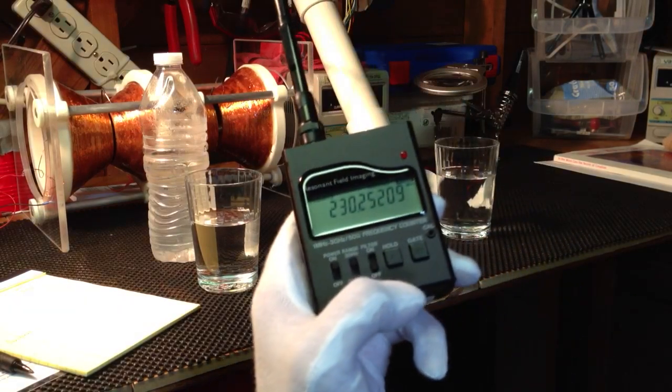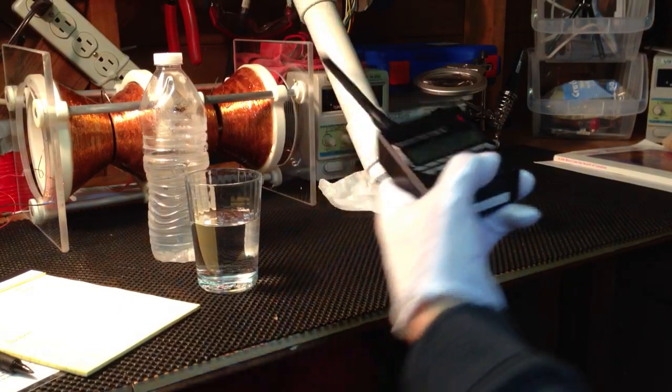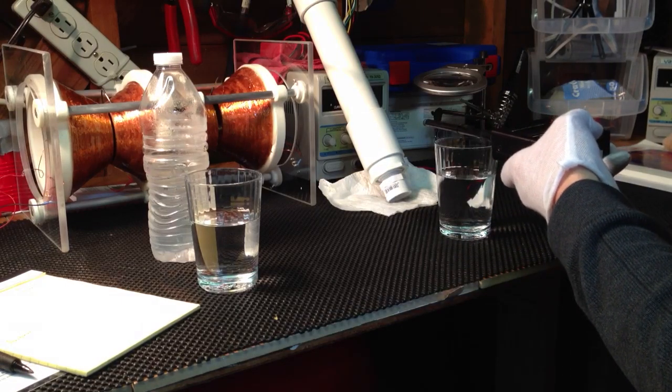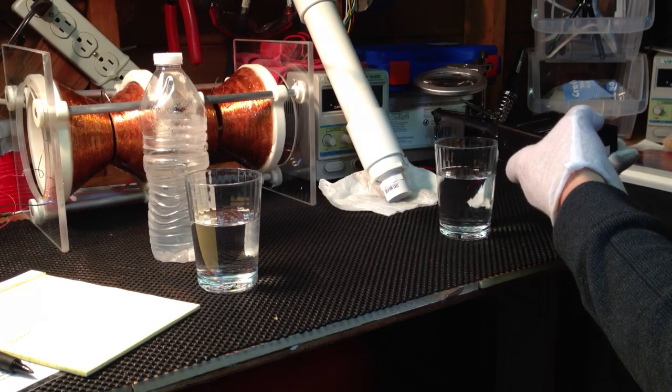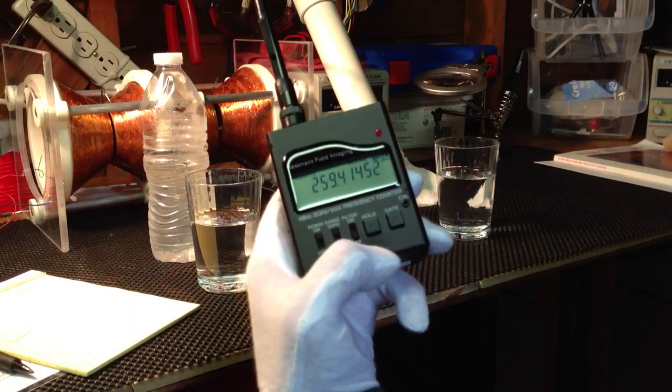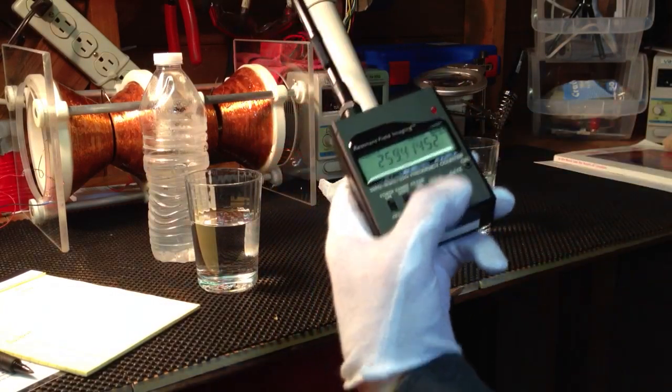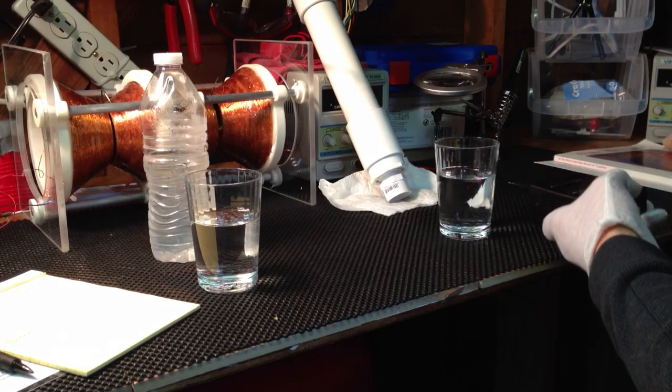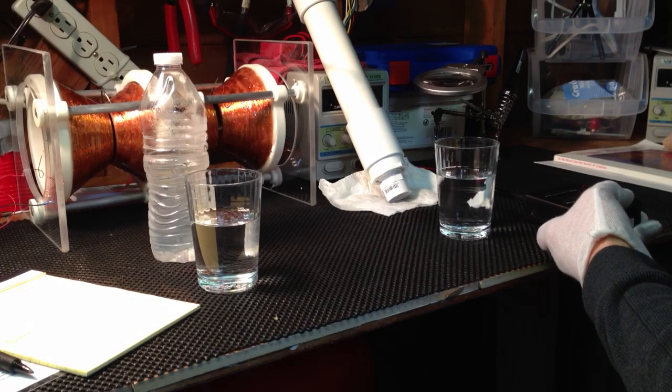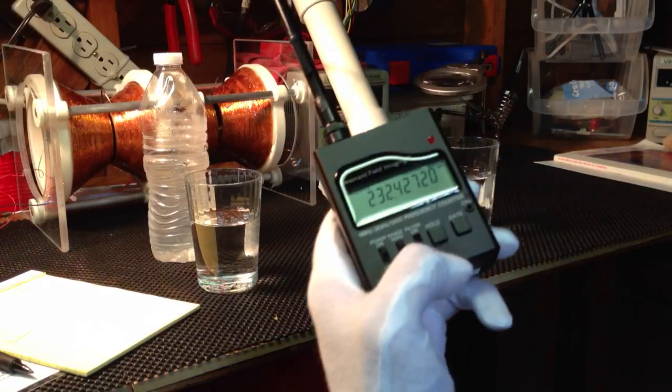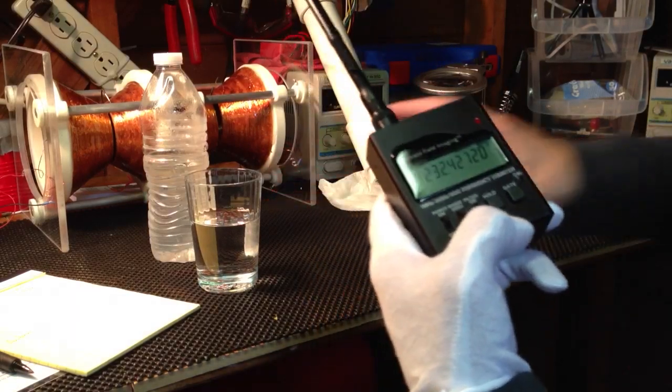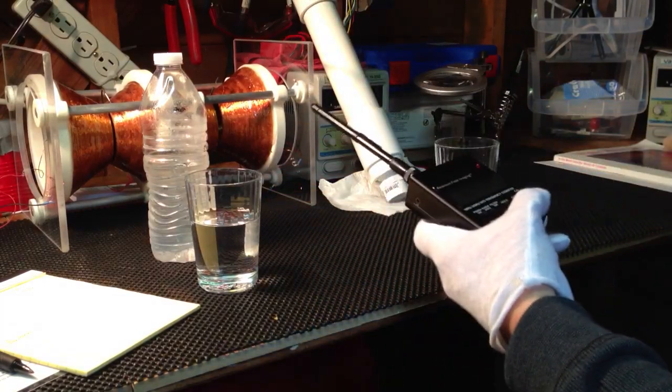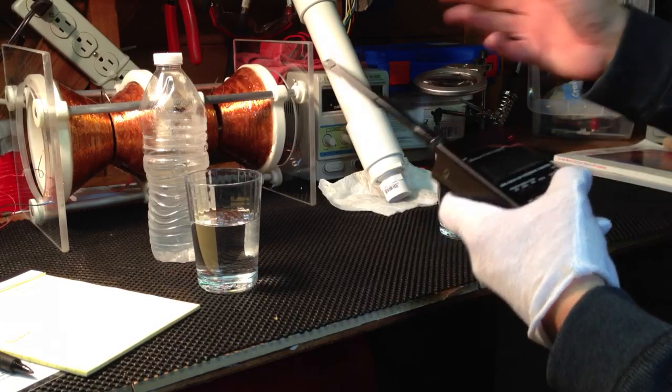Immediately I'm already getting a 230 which is a lowering from 260 to 230. Up top I'm getting a 259 where the regular water I got a 300. Another 232 on the side here. So you can definitely see the difference of the two waters from the structure to the regular.